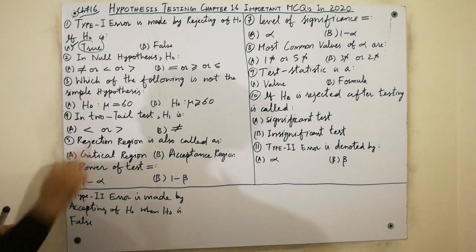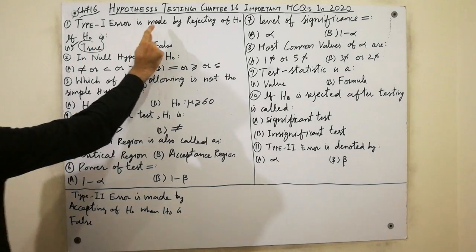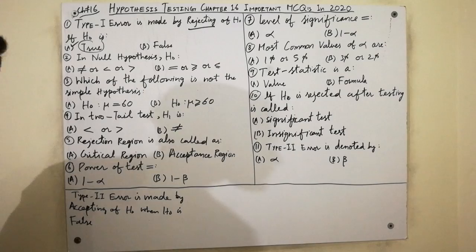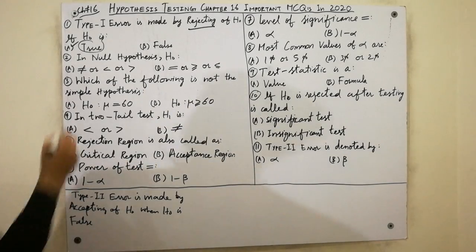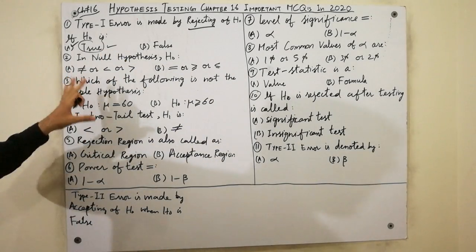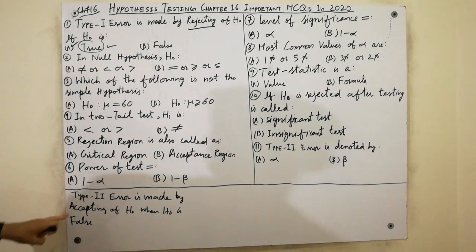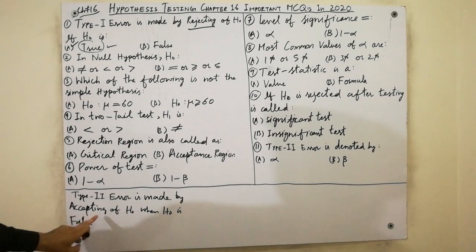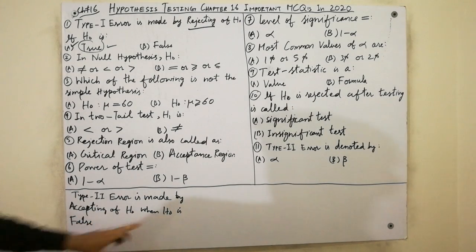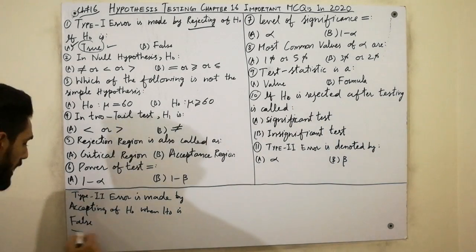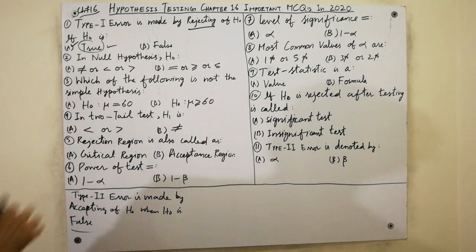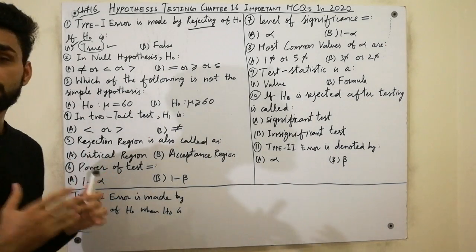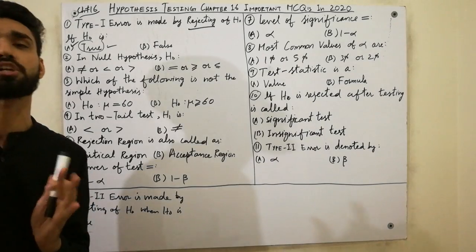Must remember: Type I error is always made by rejecting H-naught when H-naught is true. And Type II error is made by accepting H-naught when H-naught is false. So must remember these definitions — Type I error, Type II error — these MCQs are very important for you.